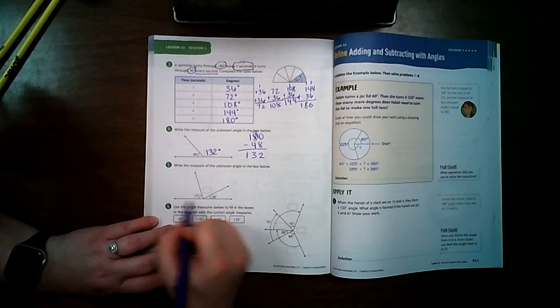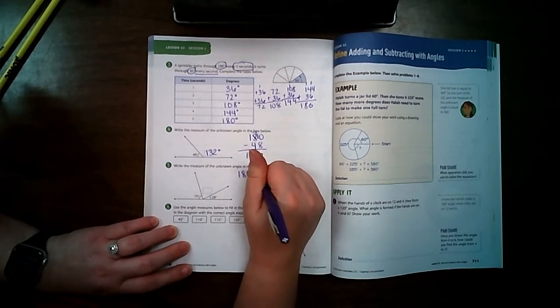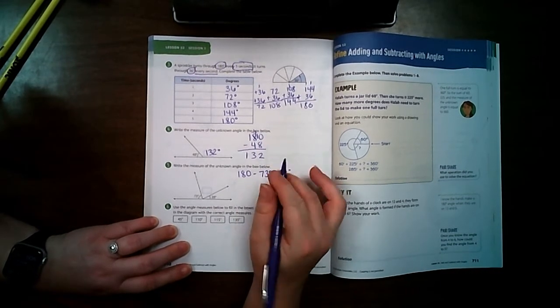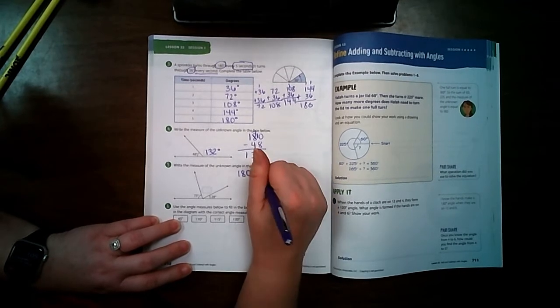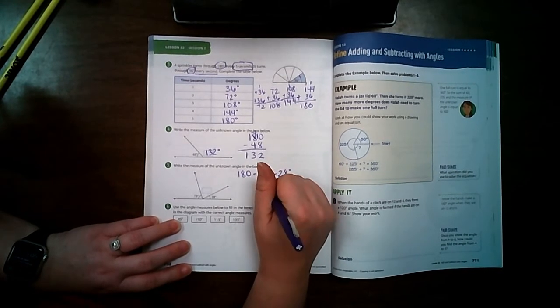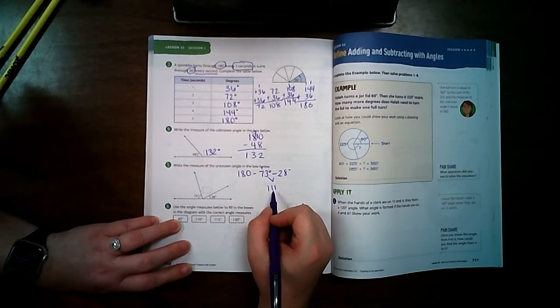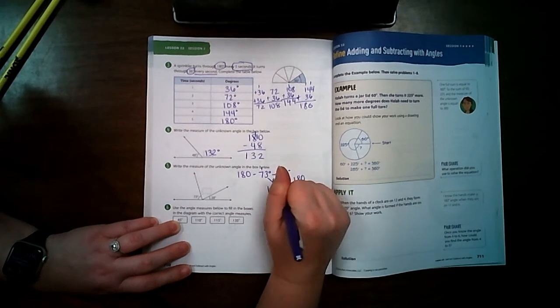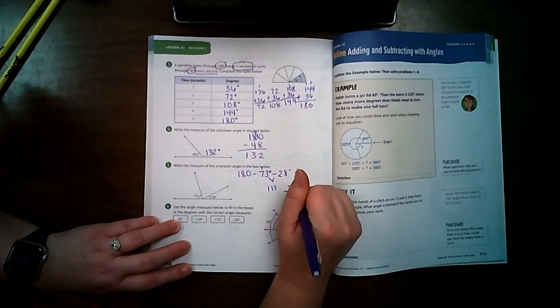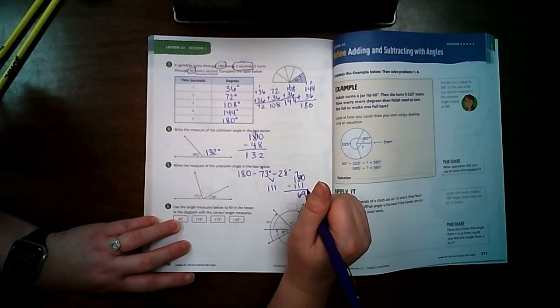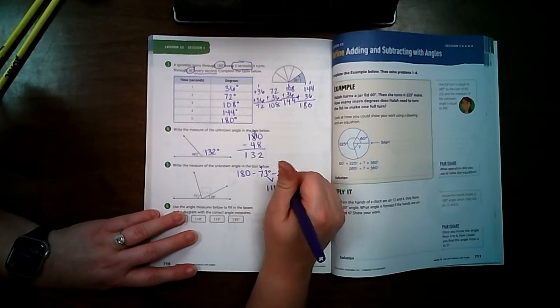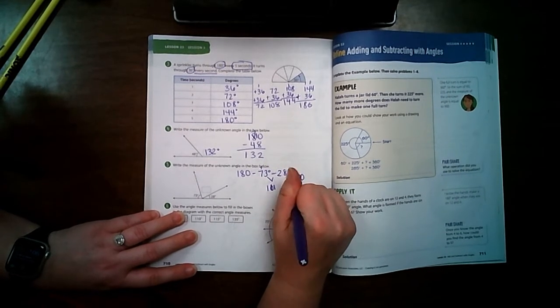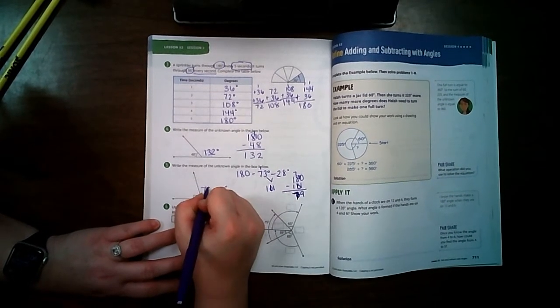Again down here I know this is 180, so I'm going to subtract 73 degrees and subtract 28 degrees. First I'm going to add those together, it's going to make it easier. Eight, nine, ten, eleven. Seven, eight, nine, ten. So 101 degrees. So that means I'm going to do 180 minus 101. Oh I've added something wrong. Eight, nine, ten, eleven, carry my one. Seven, eight, nine, ten. This should be 101. That's 79 degrees. So that means my angle is 79 degrees.